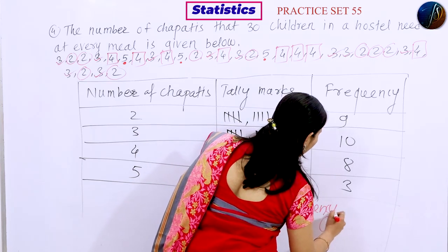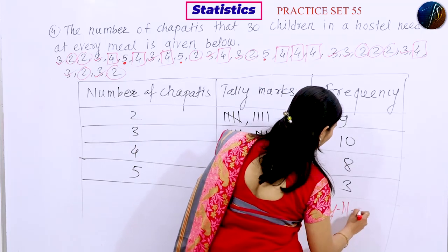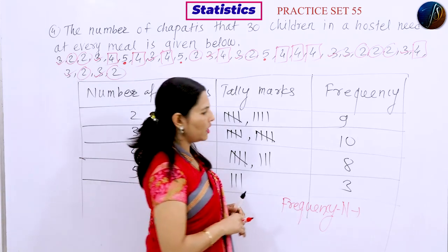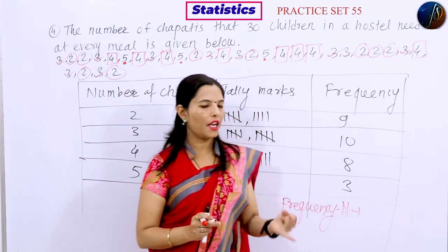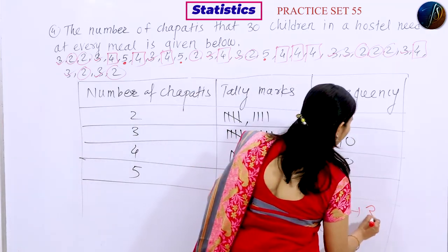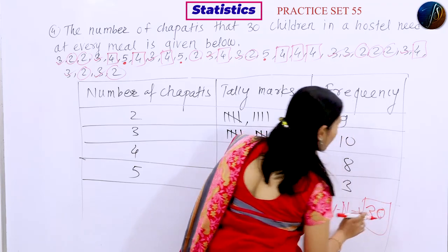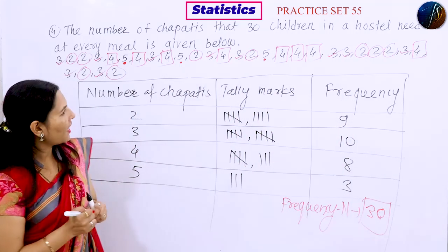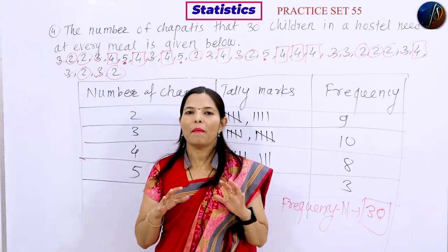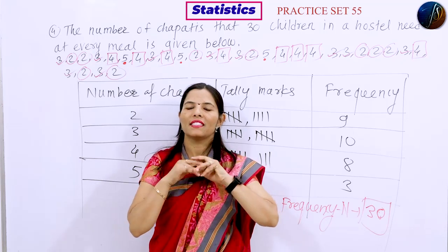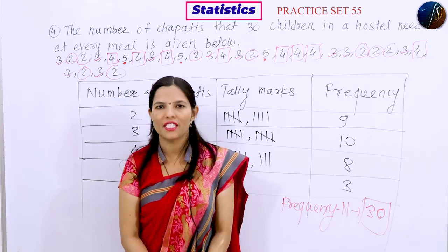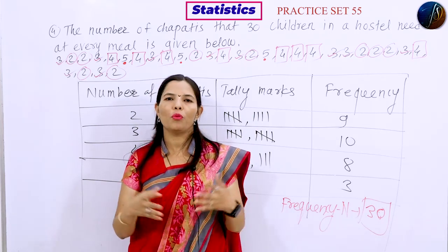We have to verify the total. The number of 30 children: 8 plus 3 is 11, 11 plus 9 is 20, 20 plus 10 is 30. So this frequency table is complete and the total is exactly 30. This completes Practice Set 5.5 and the 7th standard Mathematics syllabus.